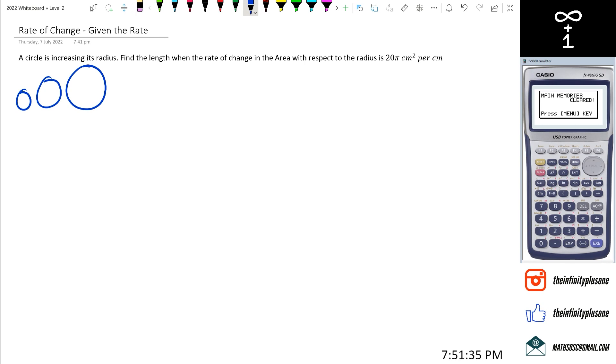So if we were to convert the question itself, the question is actually asking if dA dr, so area with respect to radius, that's what dA dr, if that equals to 20 pi, then the question is asking find the length when this happens. So we're actually trying to figure out what r is equal to. I should have actually said find the radius, but that's alright, when it's equal to 20 pi.